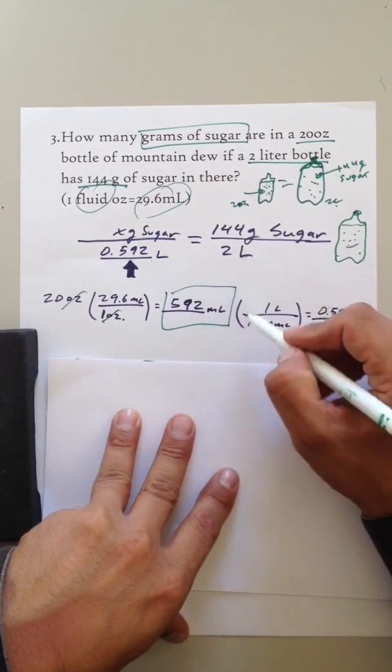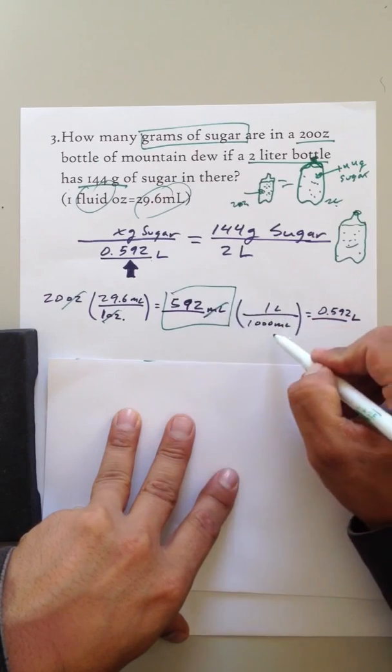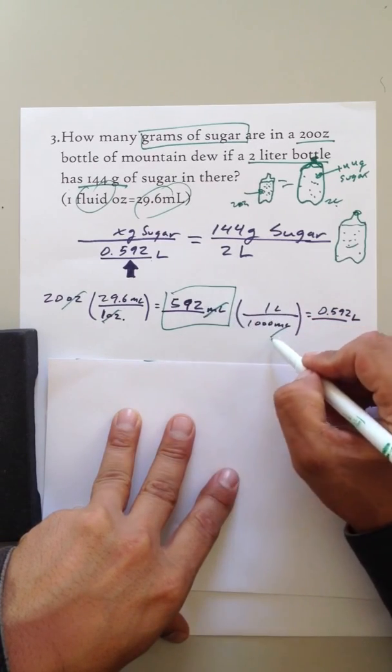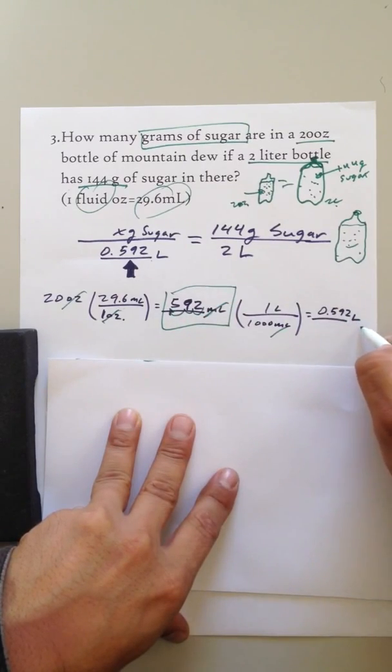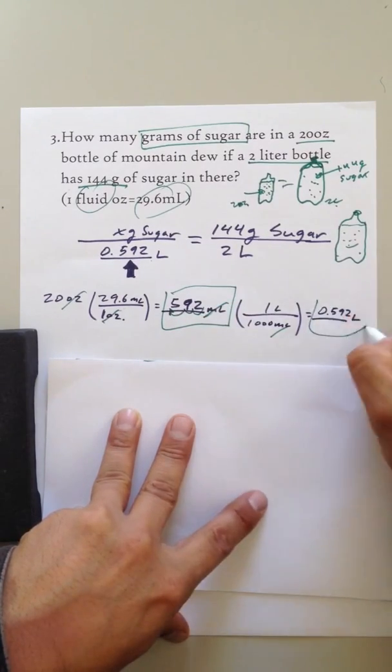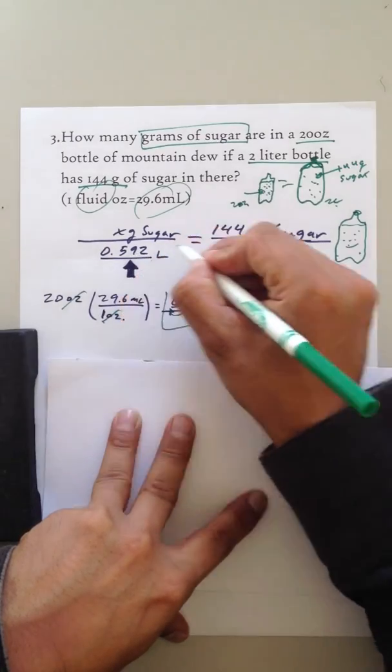But we're looking for liters, so let's just divide it by 1,000, use a conversion factor, 592 times 1 divided by 1,000. Move the decimal place three places over, 0.592 liters. Okay? So there are my liters, and that goes right here.